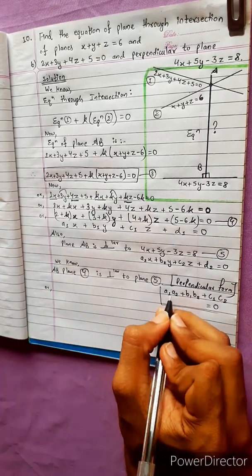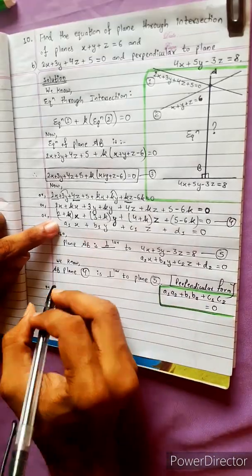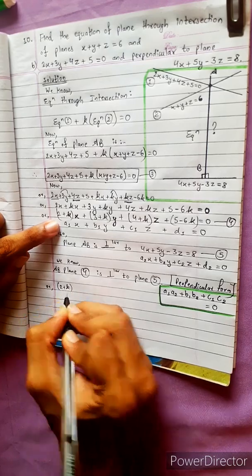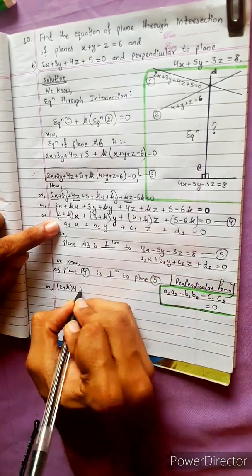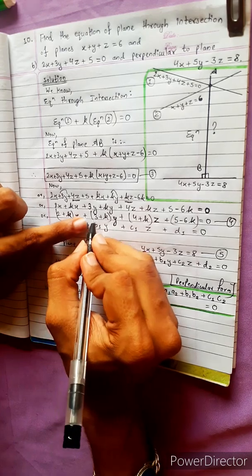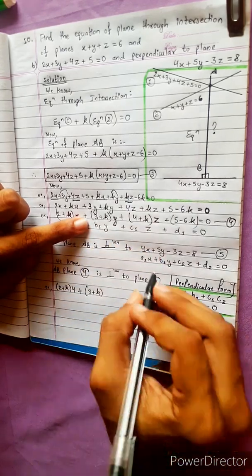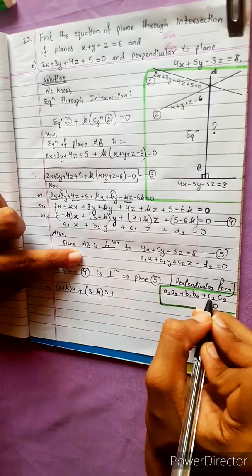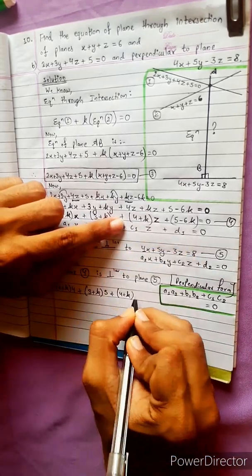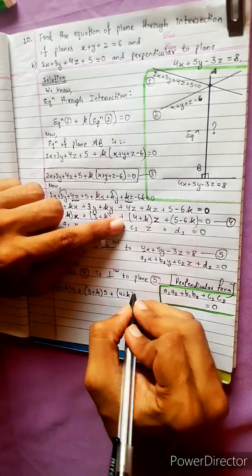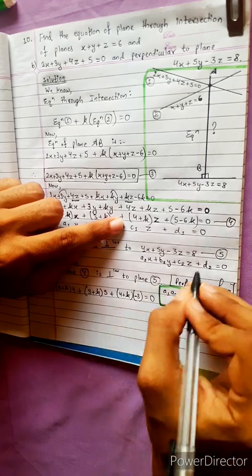A1·A2 plus B1·B2 plus C1·C2 equals to 0. This is the perpendicular form. Here A1 is (2+k), B1 is (3+k), B2 is 5, C1 is (4+k), C2 is given.